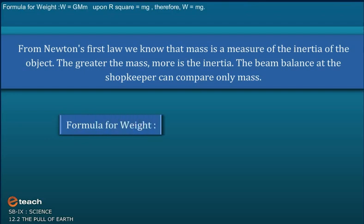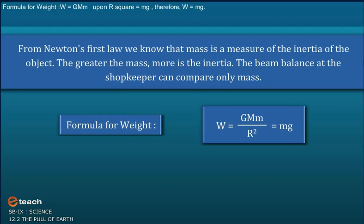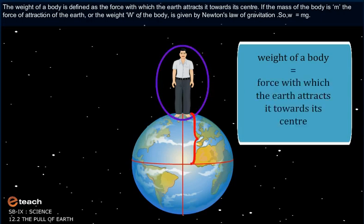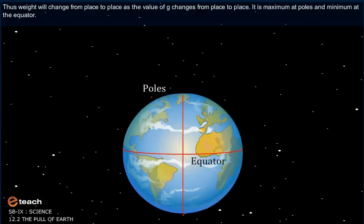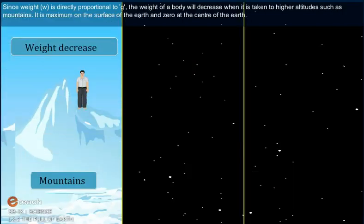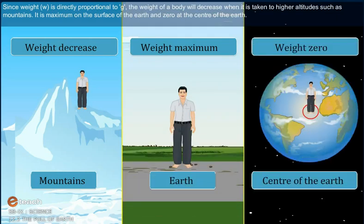The weight of a body is defined as the force with which the Earth attracts it toward its center. If the mass of the body is m, the weight W is given by W = mg. Weight will change from place to place as the value of g changes — it is maximum at the poles and minimum at the equator. Since weight is directly proportional to g, the weight of a body decreases when taken to higher altitudes such as mountains. It is maximum on the surface of the Earth and zero at the center of the Earth.